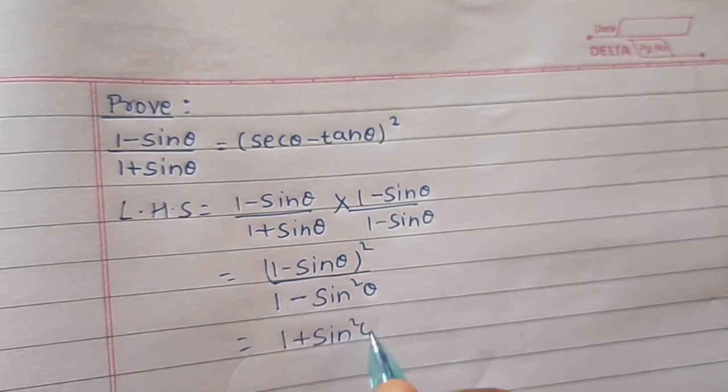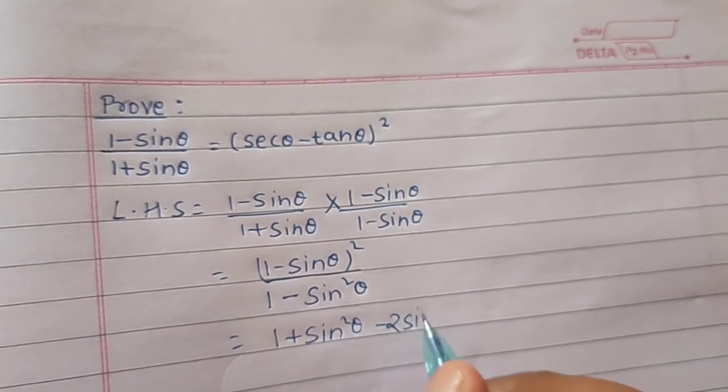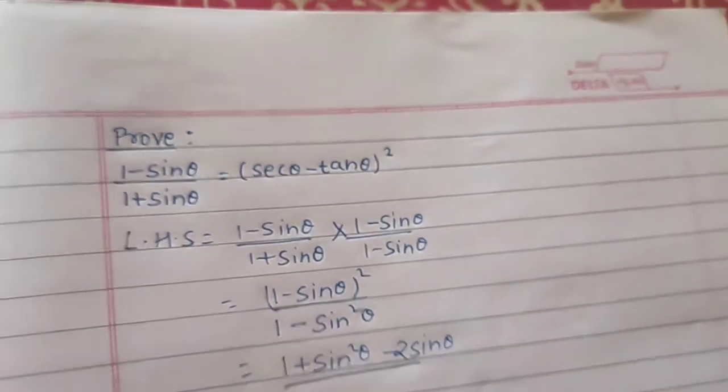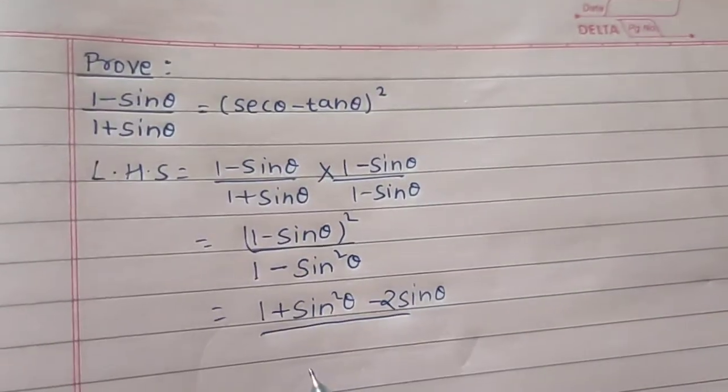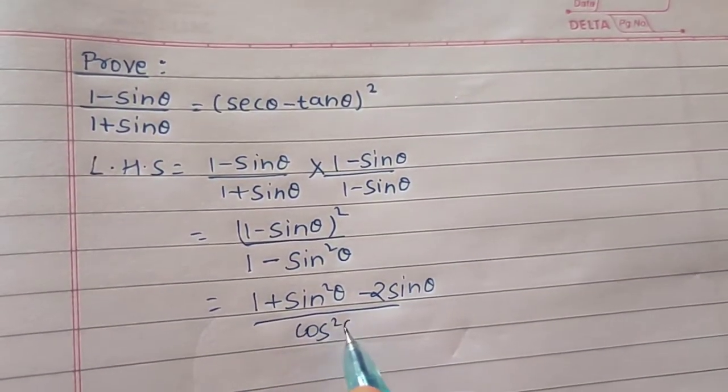1 plus sin square theta minus 2 sin theta divided by 1 minus sin square theta is cos square theta.